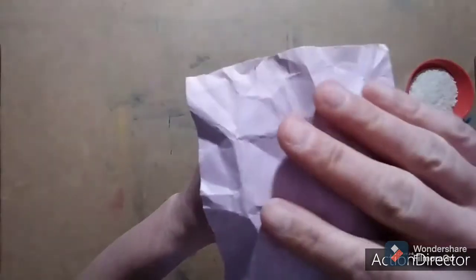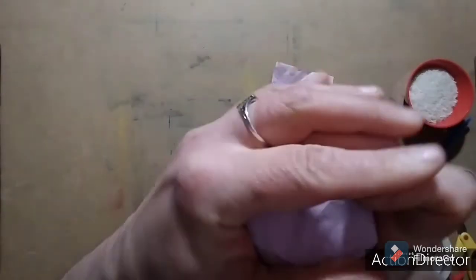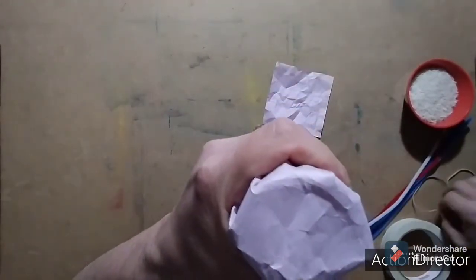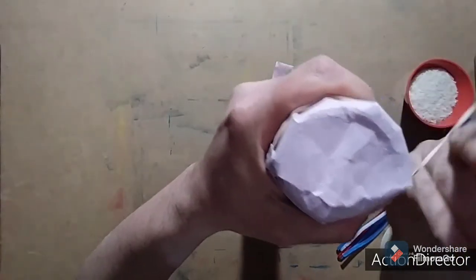Now attach one craft paper square to the end of your cardboard tube using a rubber band. Now do this carefully and make sure that the rubber band is nice and tight.